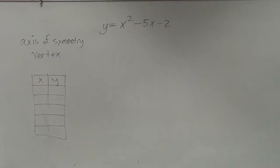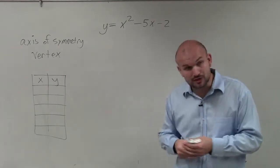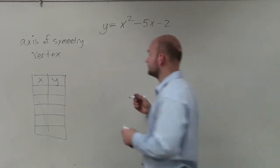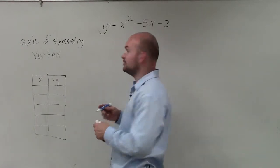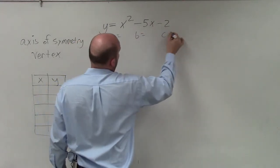So ladies and gentlemen, what we're going to do is we're going to graph y equals x squared minus 5x minus 2. Now, to go ahead and do this, the first step that I would expect you to be able to do is to first label what is a, what is b, and what is c.